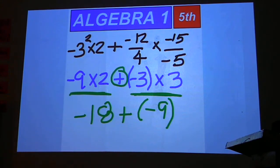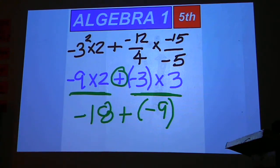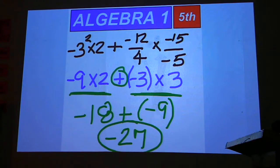Negative 18 plus negative 9: you have 18 negatives, and you're going to add 9 more negatives to it. Negative 27.